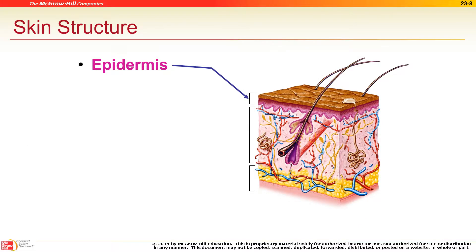The top layer is the epidermis — 'epi' means above, so above the dermis. There is no blood supply in the epidermis, which means these cells get their nutrients by leaking from the lower layers. Similarly, any toxins just leak out through the skin.